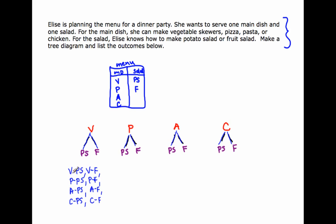So I could pick vegetable skewers with potato salad, vegetable skewers with fruit salad, pizza with potato salad, pizza with fruit salad, pasta with potato salad, pasta with fruit salad, or chicken with potato salad, or chicken with fruit salad. Interestingly, there's some structure built in: I have V, P, A, C repeating with PS and F alternating all the way down. You can also list them vertically — your choice.